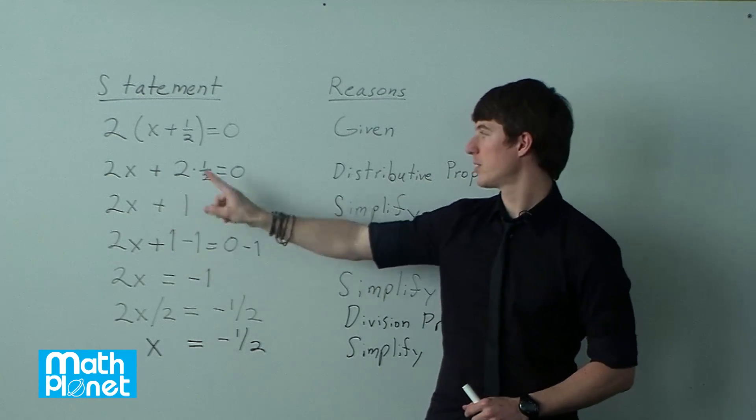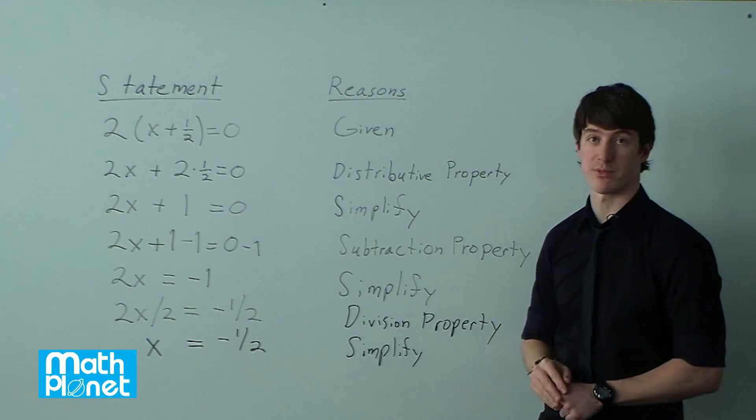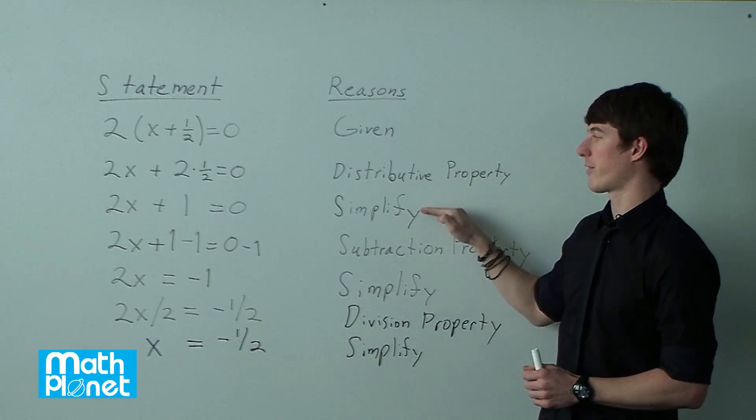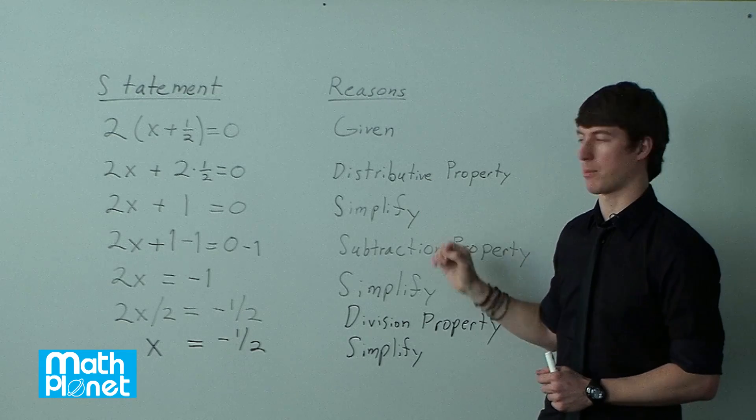So 2x stays the same. 2 times 1/2 is just 1. So we have to simplify after each step that we do something.